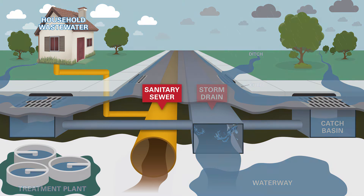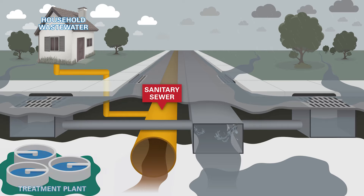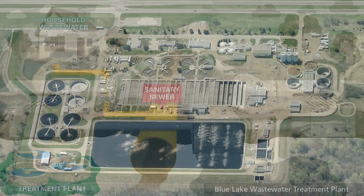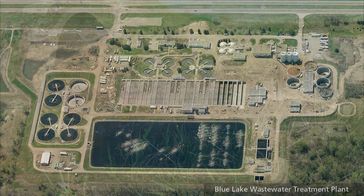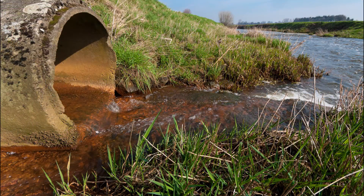The sanitary sewer system connects buildings, such as homes and businesses, to a wastewater treatment plant. This is the one that carries all dirty water and sewage. All liquids draining into this system are treated and tested before being discharged to a river.